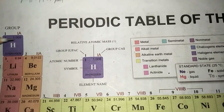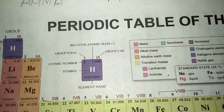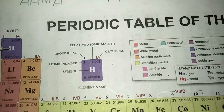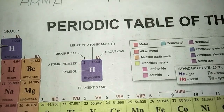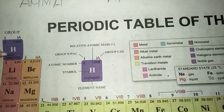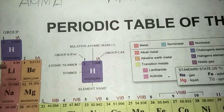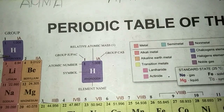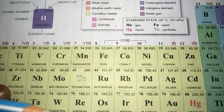In group one, hydrogen is given the first position because its atomic number and mass number are both one. It is not the correct position ideally, but since its atomic number and mass number are one, there is no other way. So hydrogen occupies the first position in both Mendeleev's periodic table and the modern periodic table.